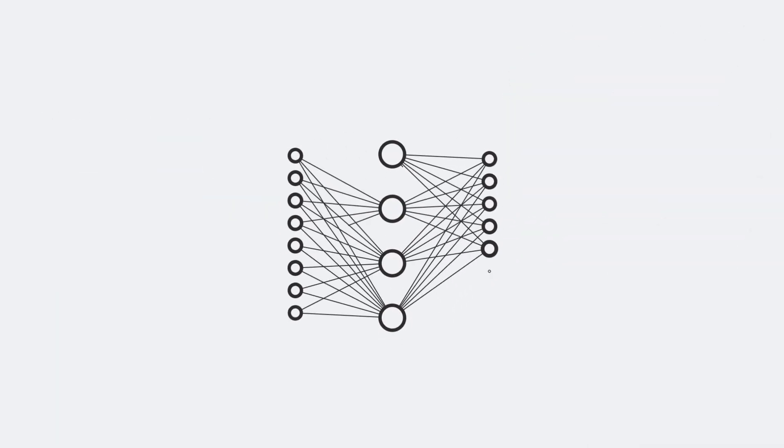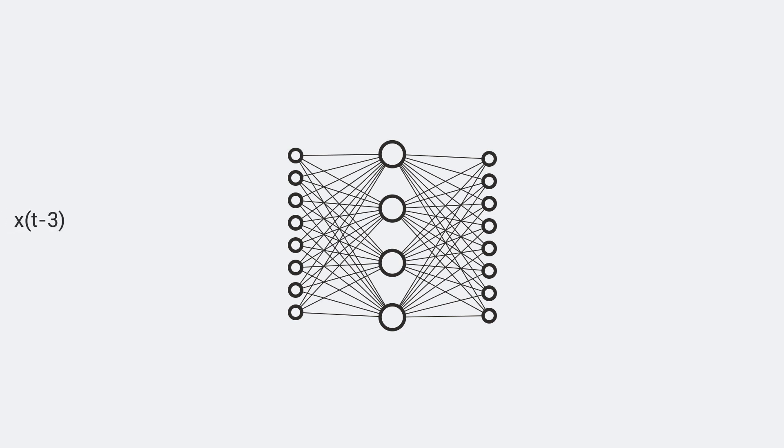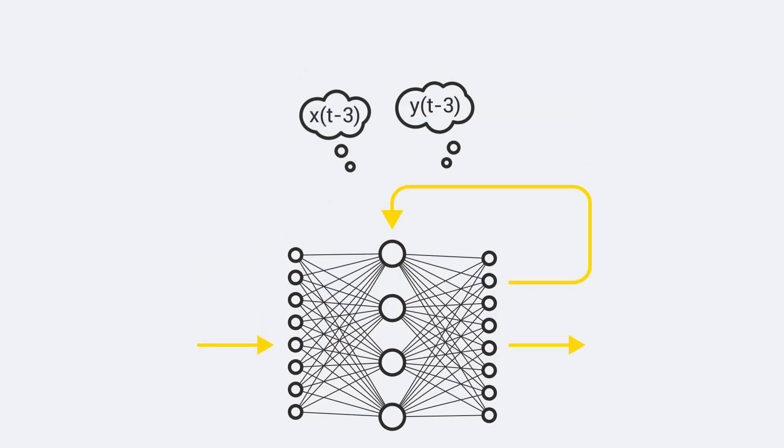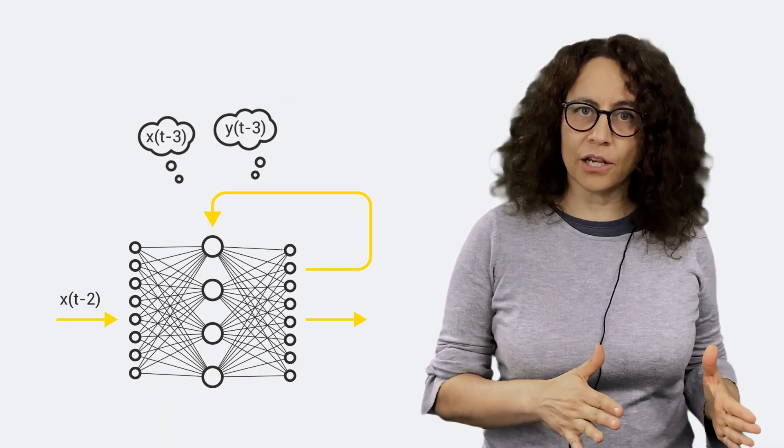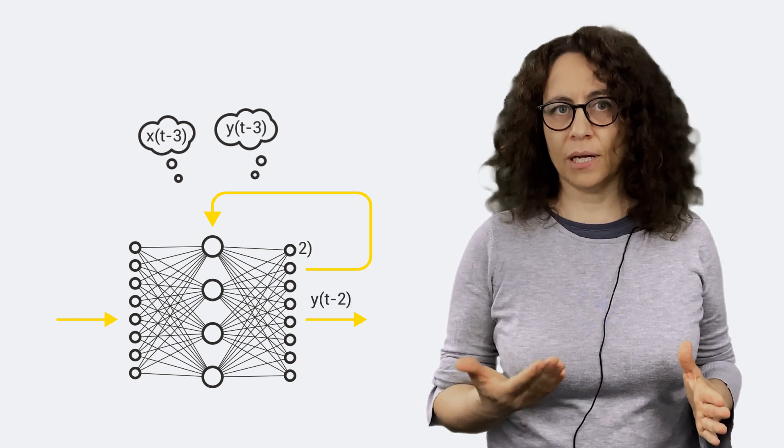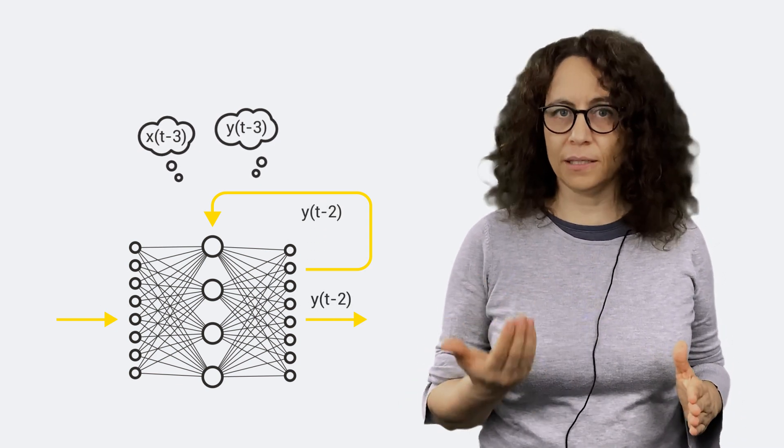Some problems, however, require working with time-ordered sequences, that is, time series. Auto and backward connections have been introduced into fully connected feed-forward networks. You see, these kinds of connections inject the variable time into the network response.